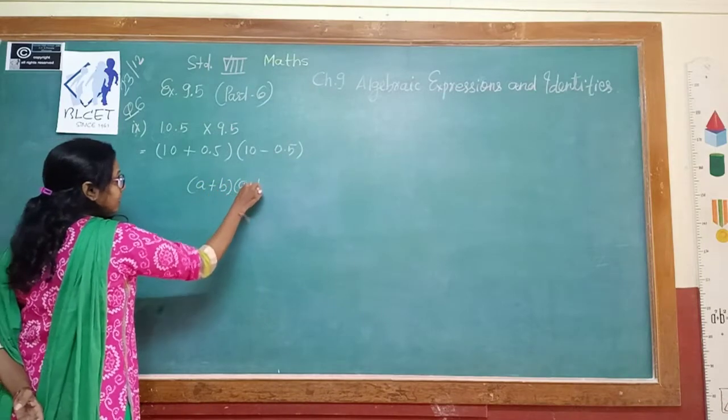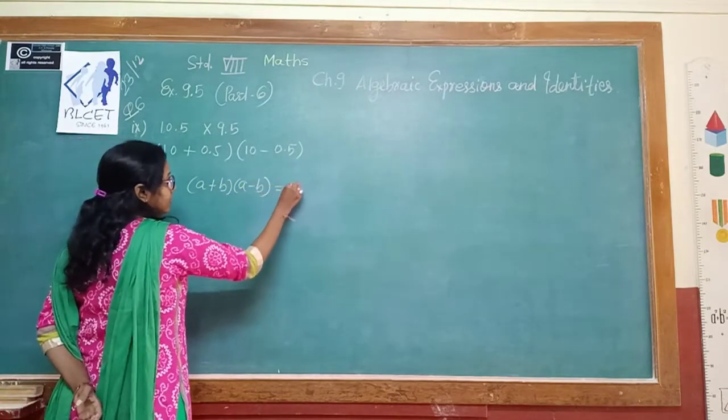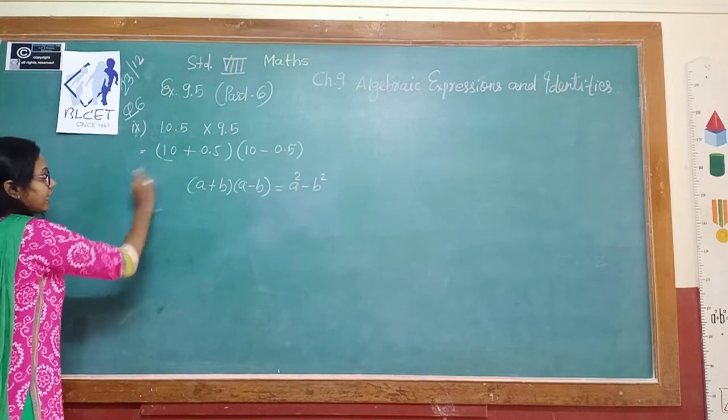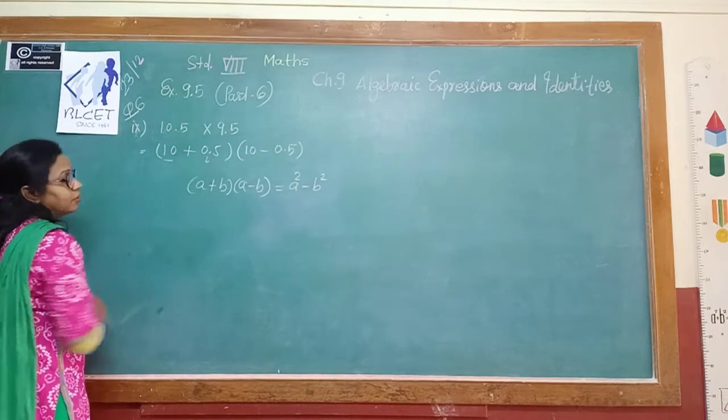A plus B, A minus B is equal to A squared minus B squared. So here, what is your A? 10. And what is your B? 0.5.